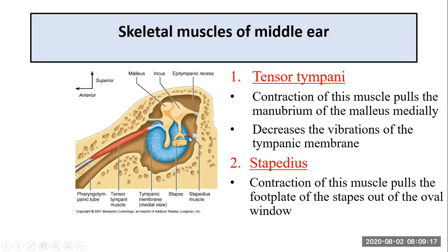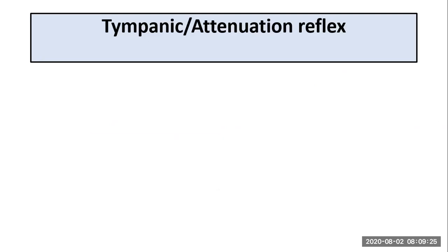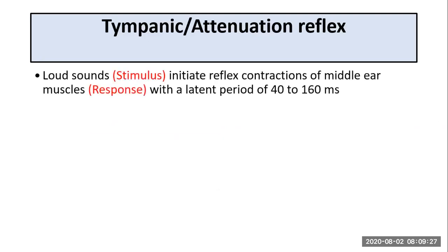When these two muscles contract, they make the ossicles rigid. The tympanic or attenuation reflex is initiated by loud sounds, which causes reflex contractions of the middle ear muscles with a latent period of 40 to 160 milliseconds. The stimulus is the loud sound and the response is the reflex contraction of the middle ear muscles, which causes the ossicles to become rigid, but this has a latent period of 40 to 160 milliseconds.